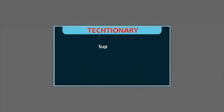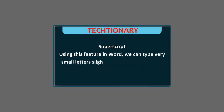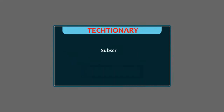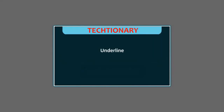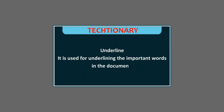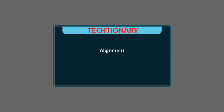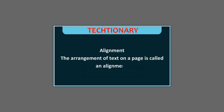Dictionary. Superscript: using this feature in Word, we can type very small letters slightly above the line of text. Underline: it is used for underlining the important words in the document. Alignment: the arrangement of text on a page is called an alignment.